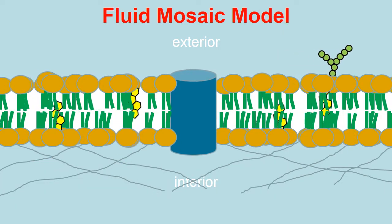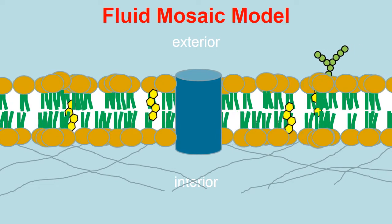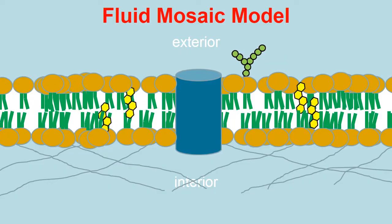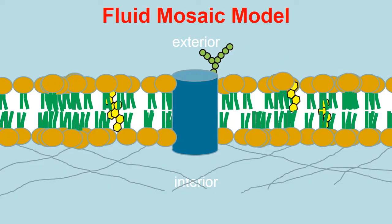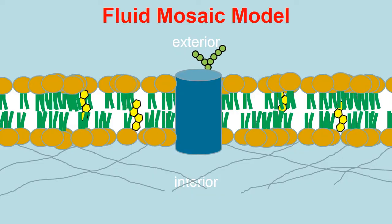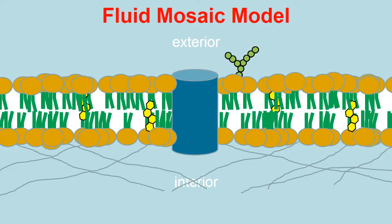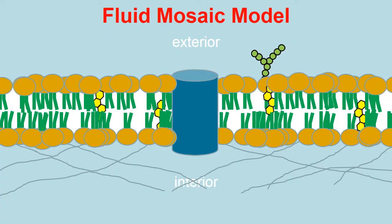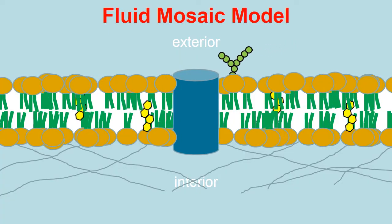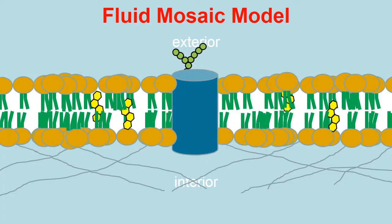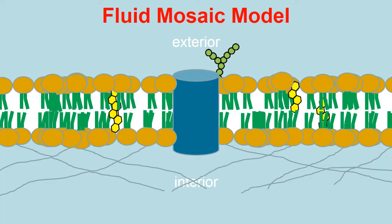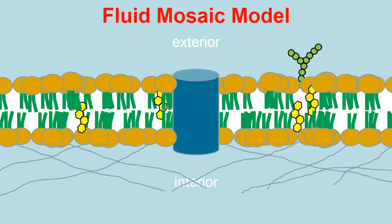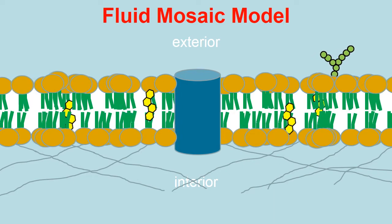This is why the plasma membrane is called the fluid mosaic model: 'mosaic' because it's made from a variety of parts, and 'fluid' because those parts can drift around and are in motion — they're not static. The phospholipids are able to drift left and right, as are the carbohydrates, proteins, and cholesterol molecules. The fluidity can be affected by temperature and other environmental factors, but holding many of the phospholipids together are those cholesterol molecules embedded within the tails.